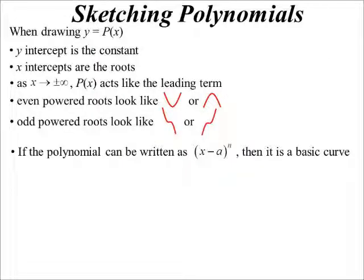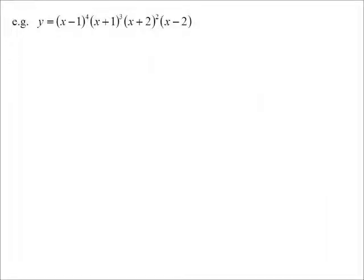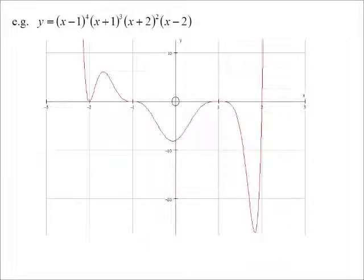Now, if you can factorize it completely, so you get x minus a to the power of n, then you know it's just going to be a basic curve. And it's shifted horizontally. Let's have a look at this one. x minus 1 to the 4, x plus 1 cubed, x plus 2 squared, x minus 2. That's what it ends up looking like. So let's just look over those things again.